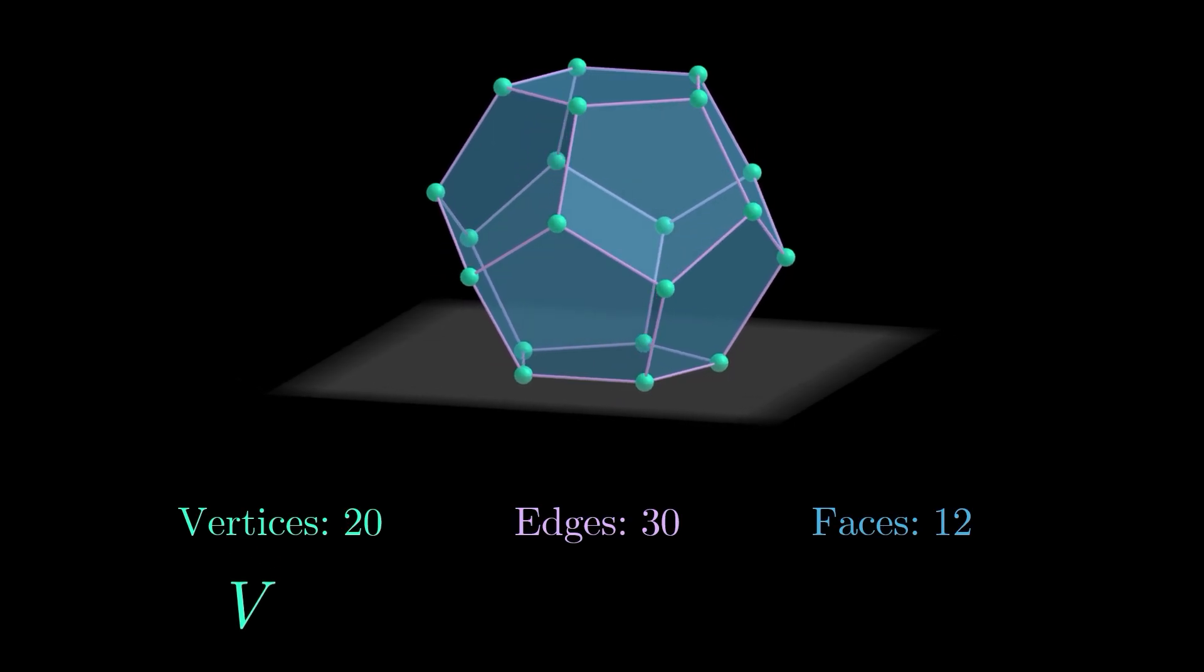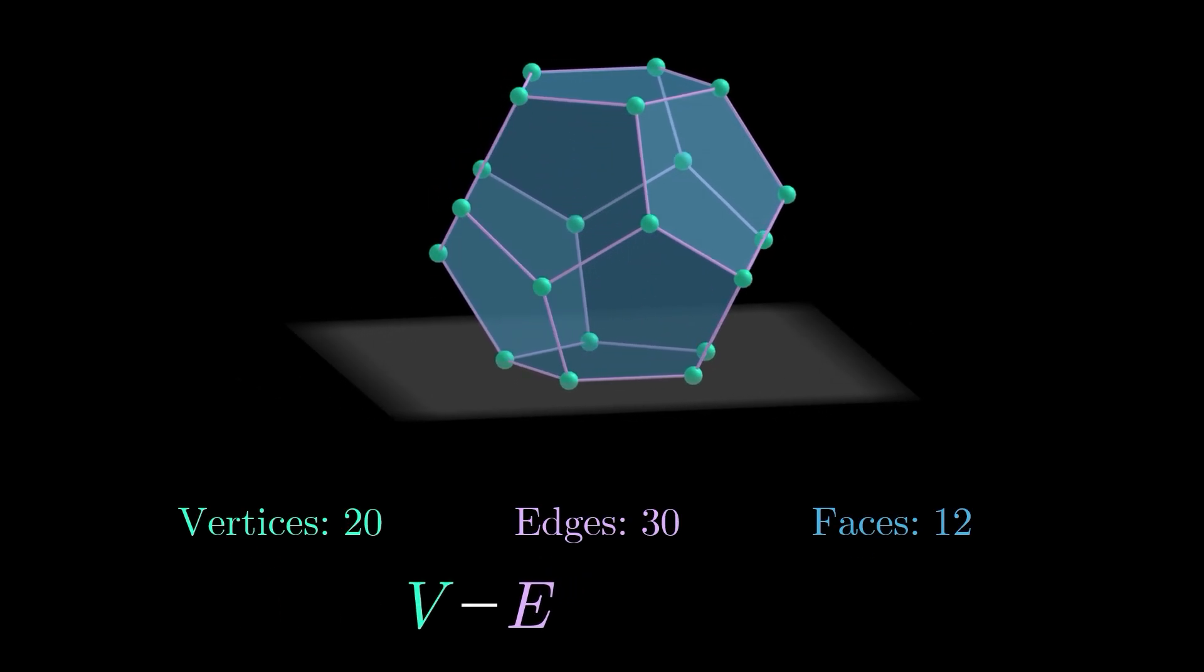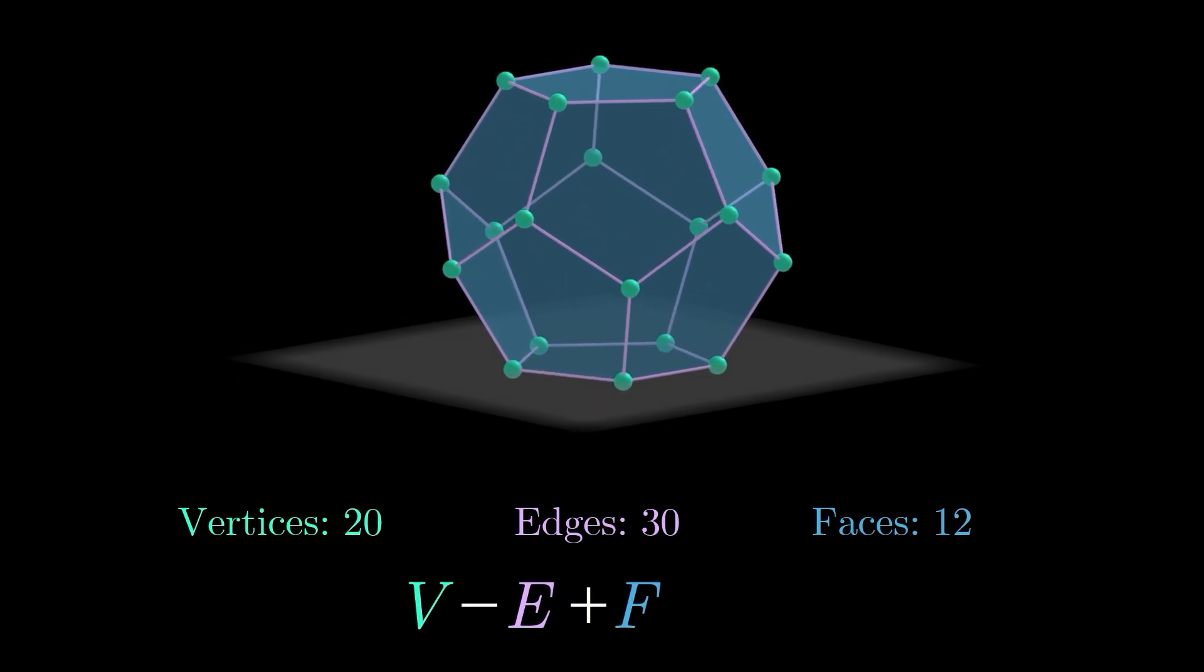Therefore, if we take the number of vertices, subtract the number of edges, and then add the number of faces, we get 2.